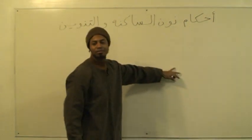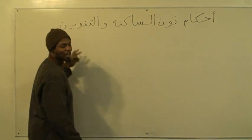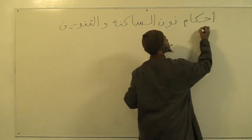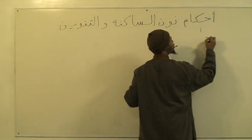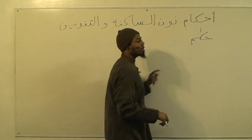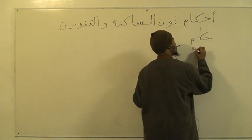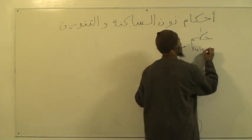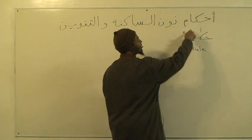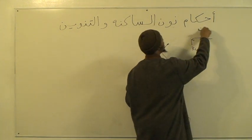We're going to go through this piece by piece. This is the title of the first chapter. Ahkam is the plural of the word hukum. A hukum is a rule, a regulation. So ahkam would mean the rules of noon.